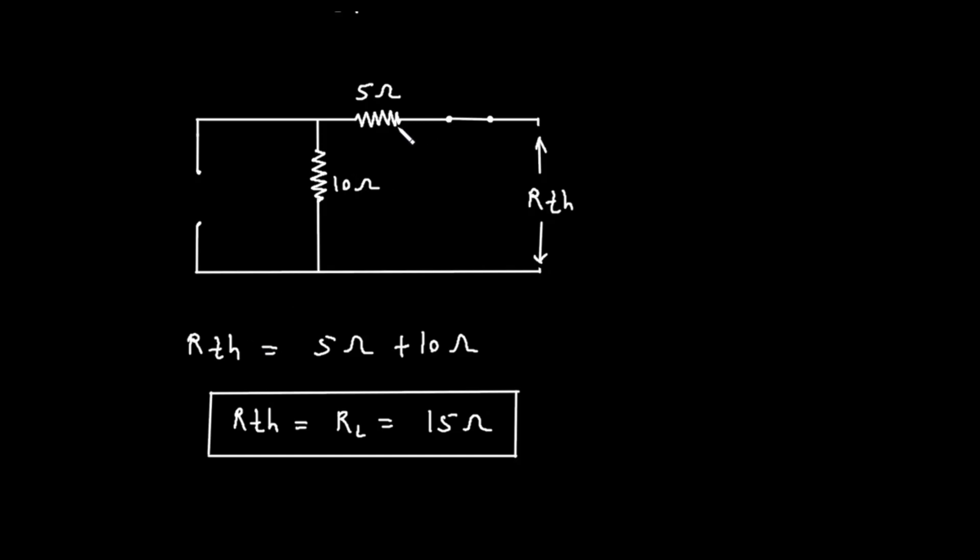So, the Thevenin resistance, R sub TH, is equal to the sum of the 5 ohm resistor and the 10 ohm resistor. The calculation is written as R sub TH equals 5 ohms plus 10 ohms. Adding these values together, we find that R sub TH is equal to 15 ohms.